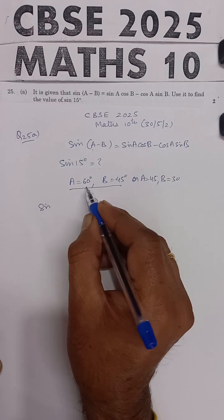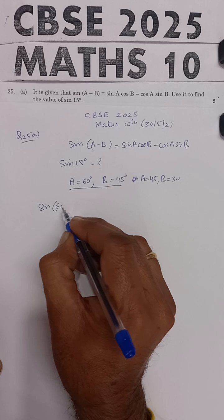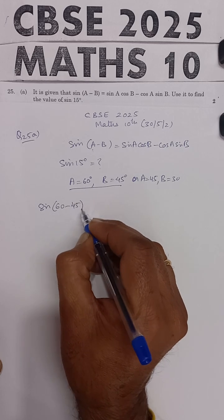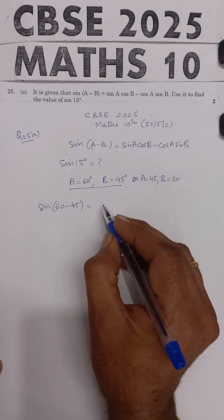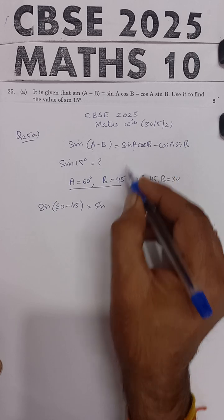So, substituting the values: A ki value 60 degrees, B ki value 45 degrees. This will be equal to, substitute the values, sine A is 60, cos B is 45,